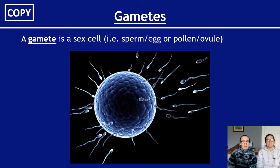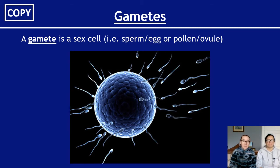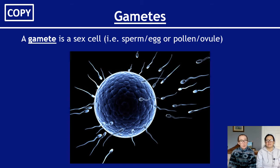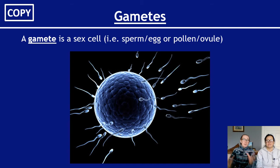What is a gamete? A gamete is just a sex cell. When we talk about sex cells like sperm and egg, or pollen and ovule, we use the proper biology word: gamete. So a gamete is just the formal name for sperm and egg — and for pollen and ovule in plants.